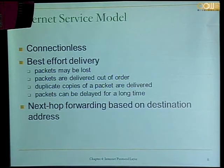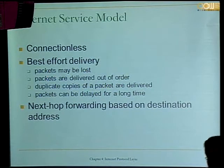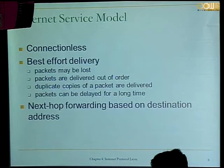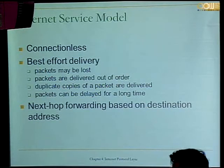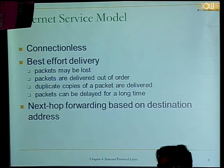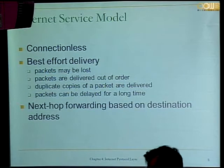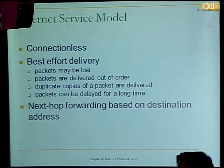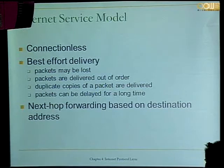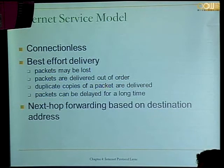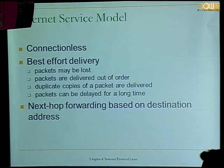The IP layer does next-hop forwarding, not end-to-end forwarding. A router only needs to know which will be the next router — it doesn't need to know the entire path. The router decides the next hop based on the destination IP address, and only needs to decide who will be next.